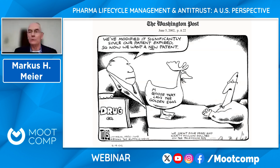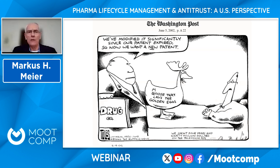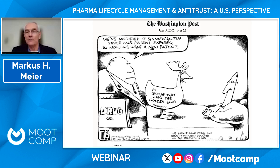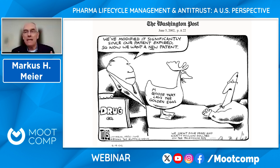This is my all-time favorite cartoon, and I use it whenever I talk about product hopping. It appeared in the Washington Post editorial page on June 5th, 2002. The editorial cartoonist shows a drug company standing in front of the patent office saying: we've modified it significantly since our patent expired, and so now we want a new patent. What they have is the goose that lays the golden egg — but they scratched out 'goose' and it now says 'moose,' with horns on the goose's head. And down in the corner the side character says: we spent four years and $90 million on television ads. This captures the spirit of a product hop that's no better, just more expensive, just trying to hold on to a monopoly.